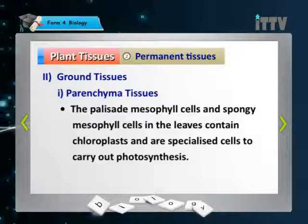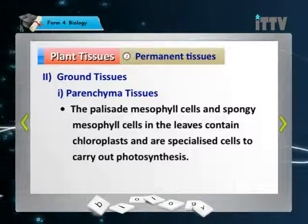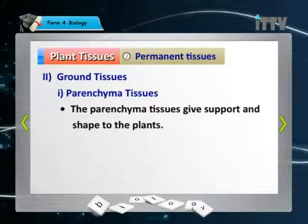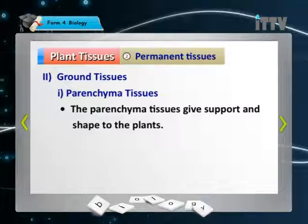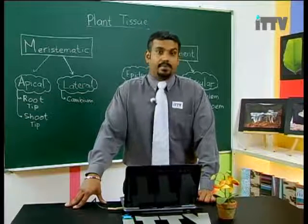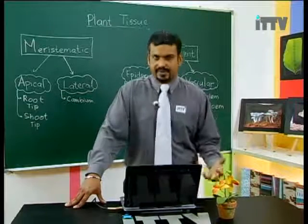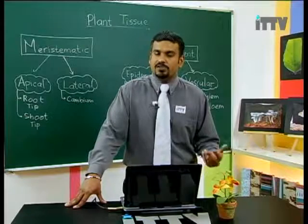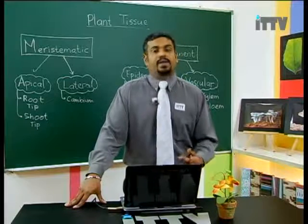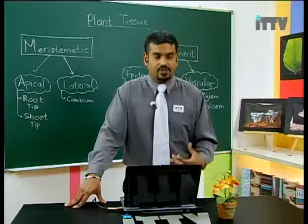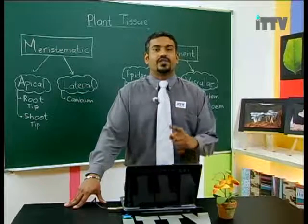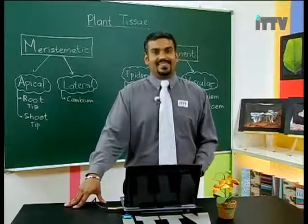The palisade mesophyll cells and spongy mesophyll cells in the leaves contain chloroplasts and are specialized cells to carry out photosynthesis. Parenchyma tissues also give support and shape to the plants. Remember: parenchyma, colenchyma, and sclerenchyma all provide support, but what is special about parenchyma is its storage of starch and glucose made from photosynthesis.